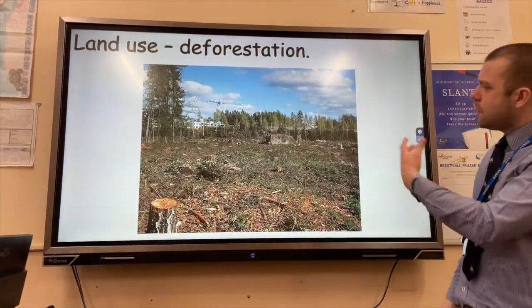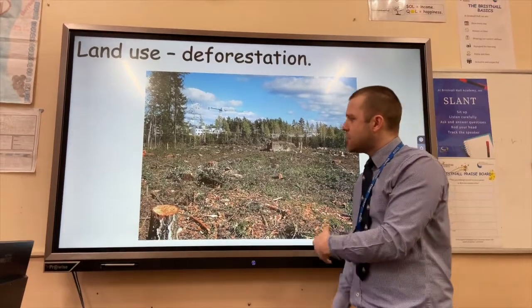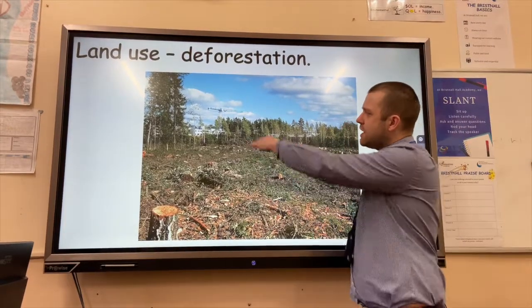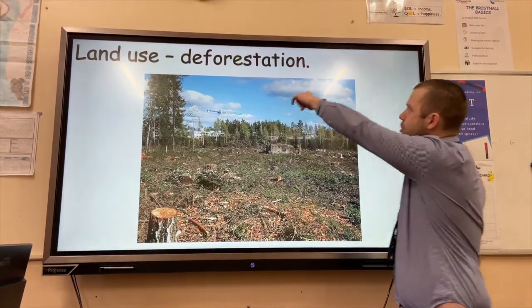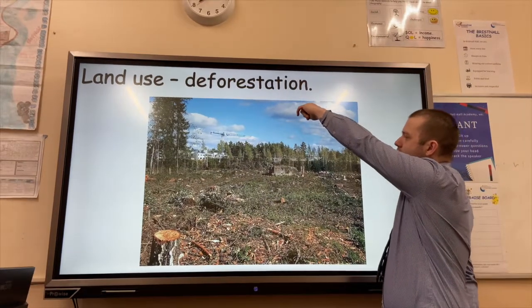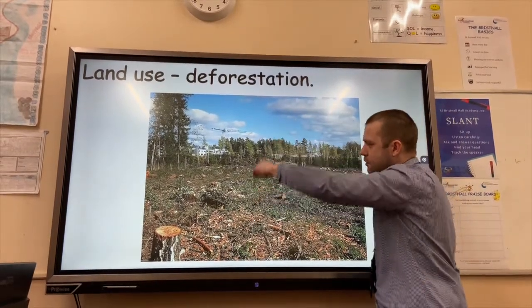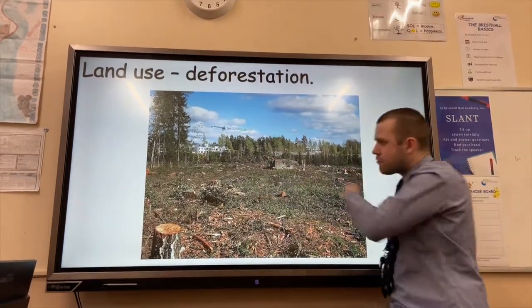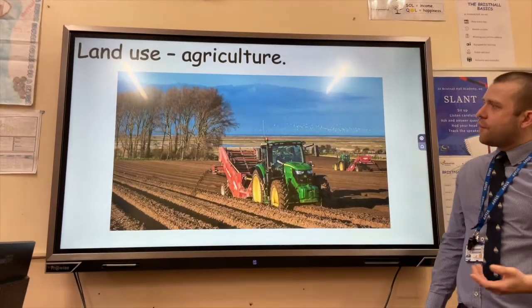Deforestation — the cutting down of trees for housing projects, for example — reduces vegetation interception. So when rain falls from the clouds, it doesn't hit the leaves before hitting the ground; it goes straight to the ground and straight to the river.